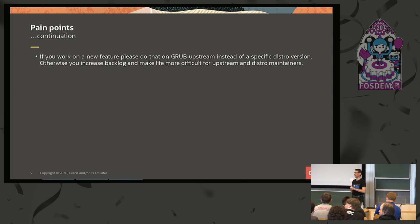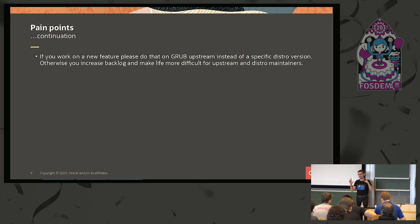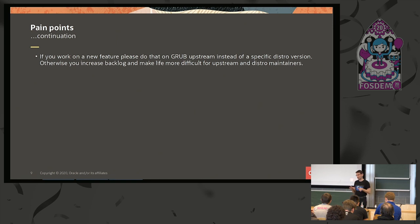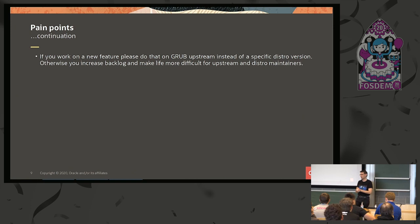Question: how about making the release cadence quicker, like two releases per year? The question was whether it is possible to shorten the release cadence. Yes and no — it will be possible if we have a new review system and something that automates testing of Grub. I'm considering that and I hope it will happen in about a year, and then we will consider shortening the release cadence.